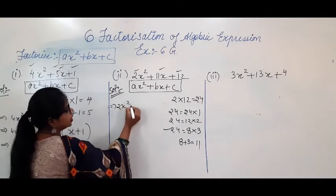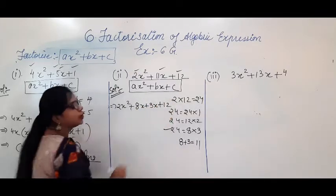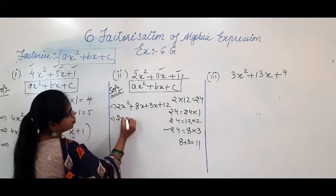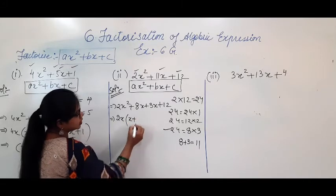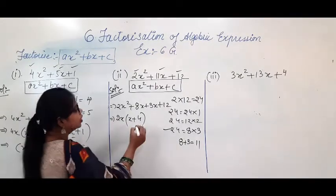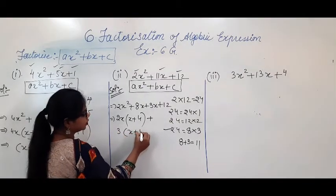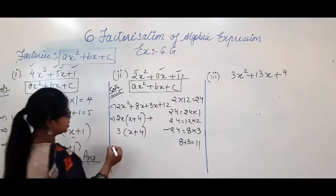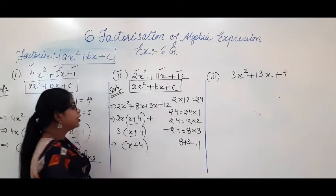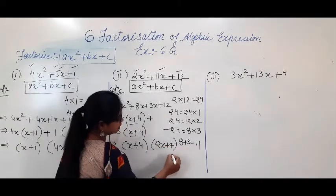Now substitute: you will get 2x² + 8x + 3x + 12. Pick out the common from here. If I take out 2x common, I get 2x(x + 4). From the remaining, taking 3 common gives 3(x + 4). So x + 4 is common. Write down (x + 4), and what is left is (2x + 3). So (x + 4)(2x + 3) is the answer.